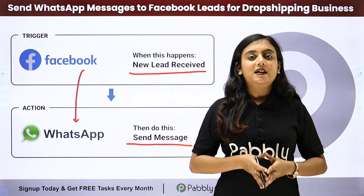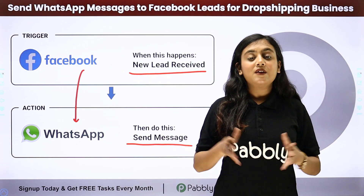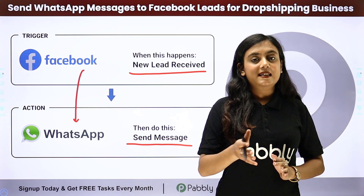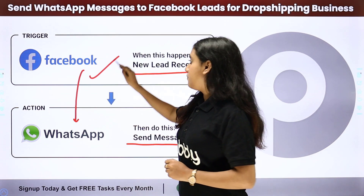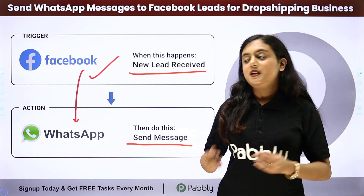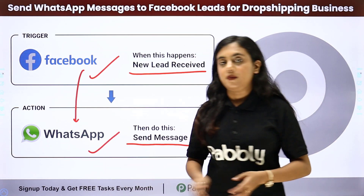In Pabbly Connect, to start an automation process, we need triggers and actions. In this process, my trigger application is going to be Facebook lead ads and my action application is going to be WhatsApp Cloud API.